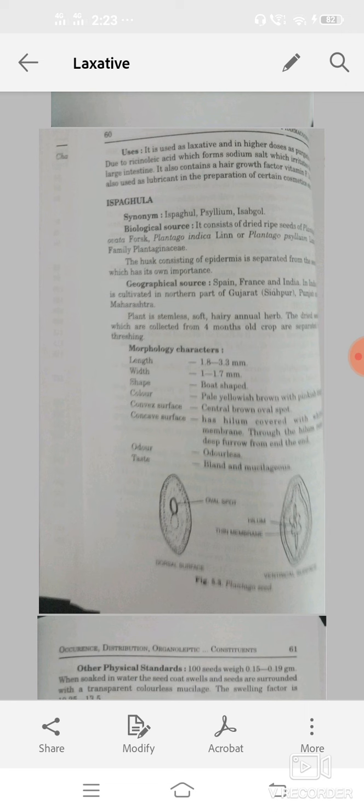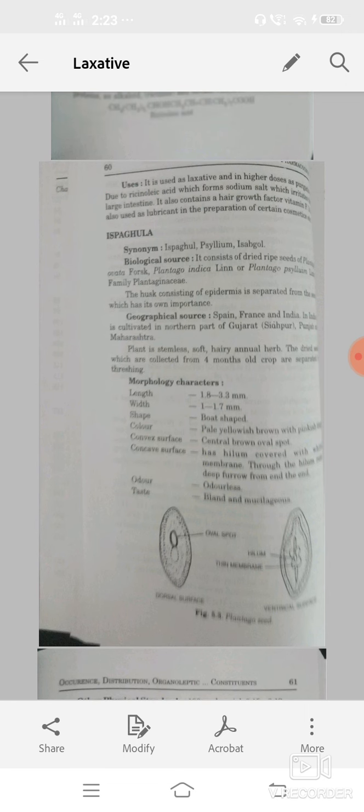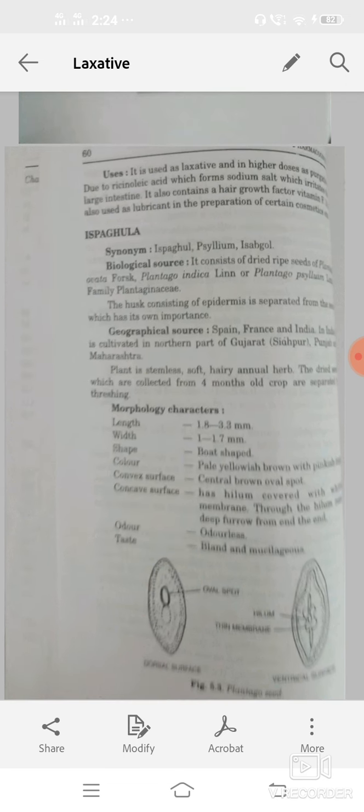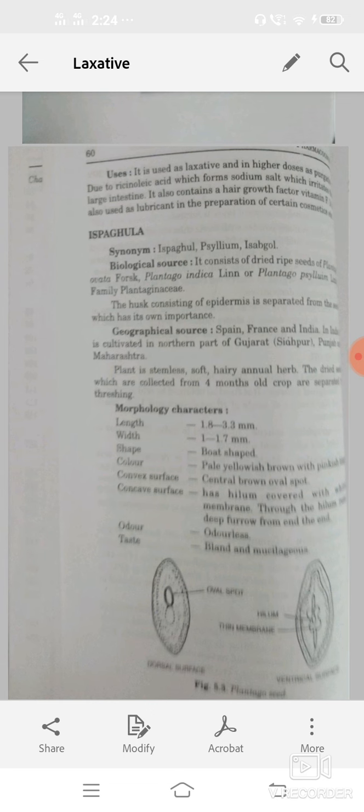Isabgol: synonym isabgol. It consists of dry ripe seeds of Plantago ovata, belongs to family Plantaginaceae. The husk consists of epidermis, is separated from the seeds. Geographical source: Spain, France, India.